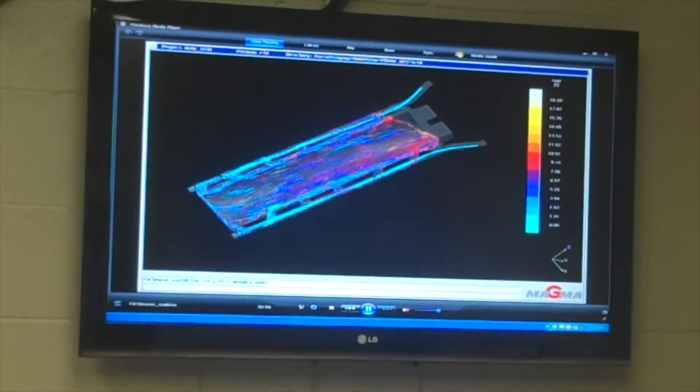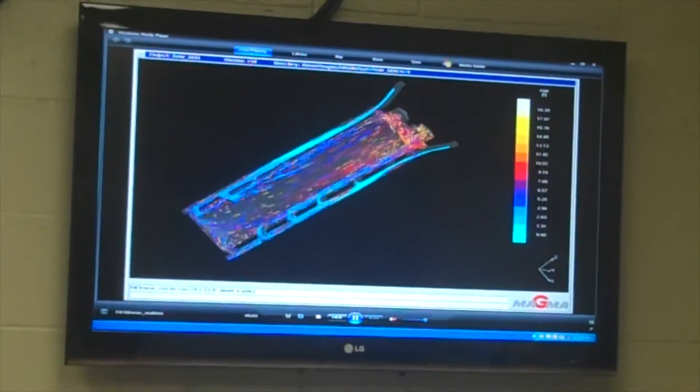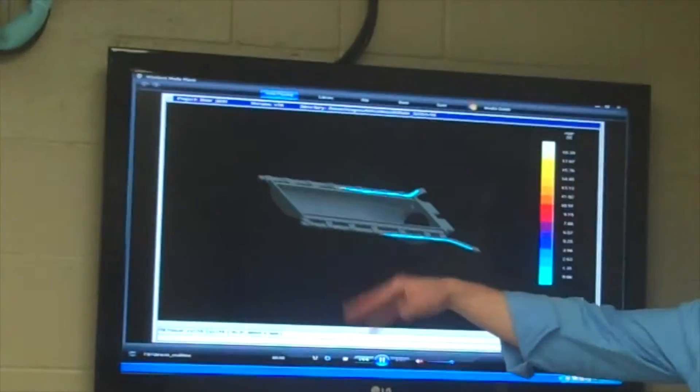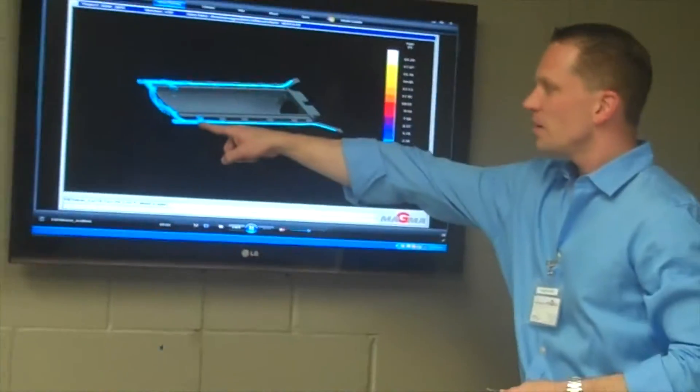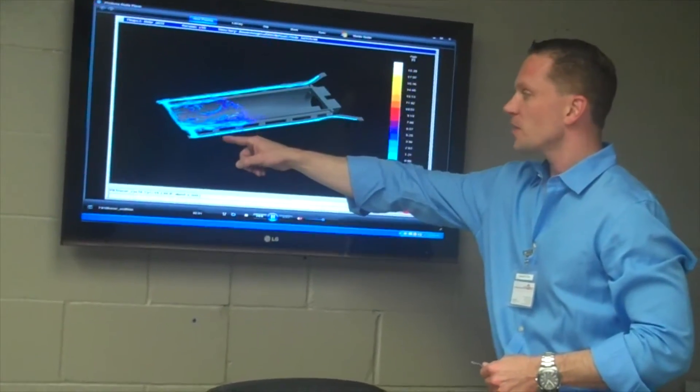So what we can see is when the different ingates actually become active with different metal. You can see basically as it continues to tilt, these are the main ingates that are active that fill the majority half of the bottom section of the casting.